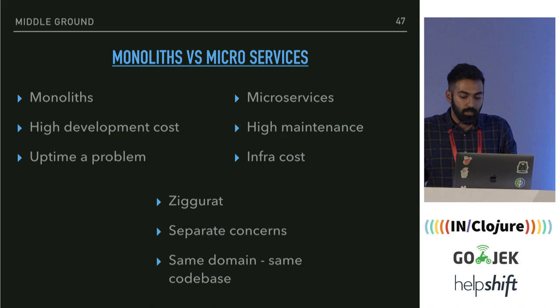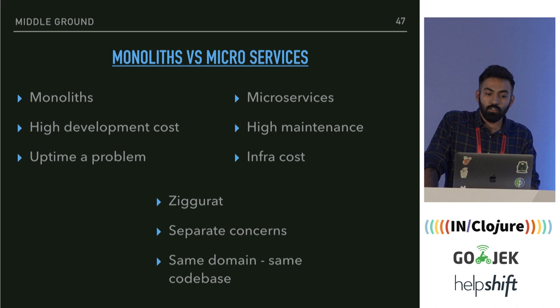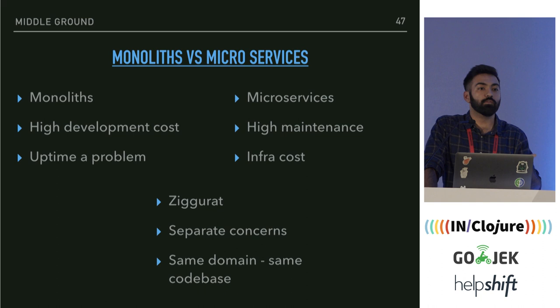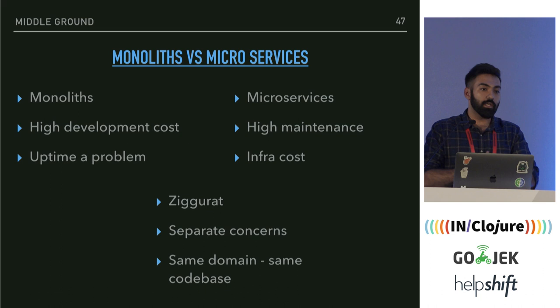A discussion about monoliths versus microservices comes up. Monoliths have high development cost due to no separation of concerns — jumbled code that's hard to maintain, and uptime issues. Microservices are better at separation, but the problem is high maintenance in terms of number of services. At Gojek, we have only around 150 to 160 engineers but around 400 microservices, so it's not feasible to maintain that many services. We found a sweet spot: separation of concern in the codebase, but as an abstraction, an actor can run as separate actors.